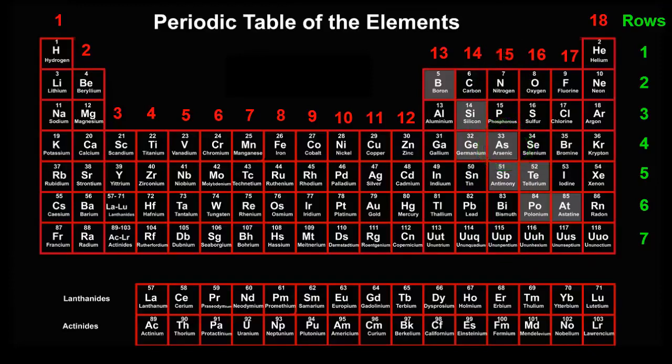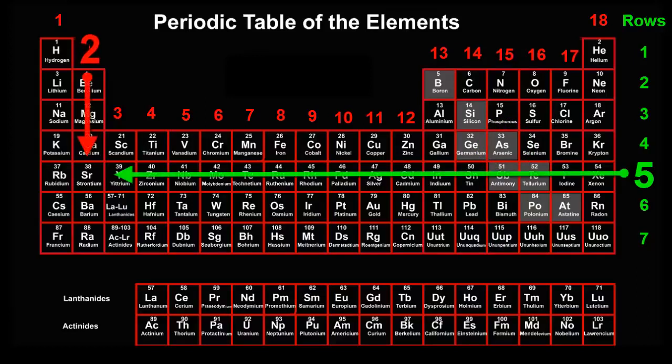But what if you were asked which element is in row 5 and group 2? There can only be one answer. Strontium. Each element has its own unique combination of row and group.